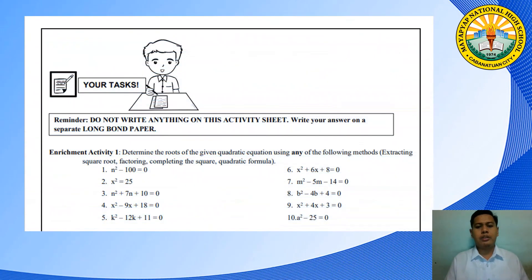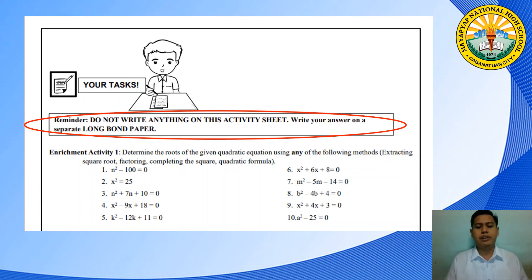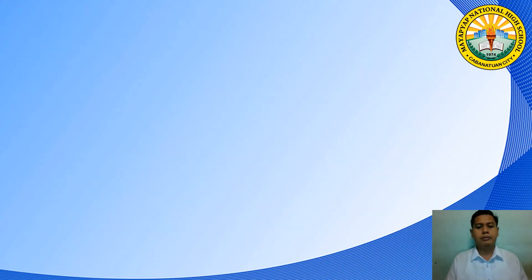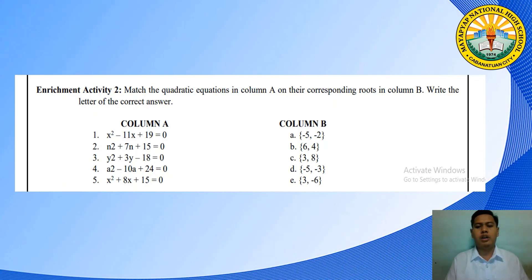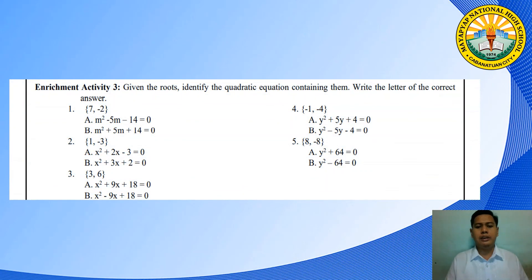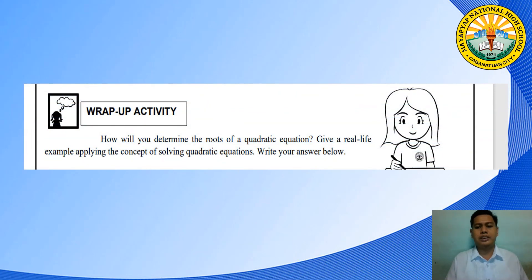Turn your activity sheet to the enrichment part. Do not write anything on the activity sheet — write your answers on a separate long bond paper. For enrichment activity 1, determine the roots of 10 equations using any of the four methods. For enrichment activity 2, match the quadratic equation from column A to its corresponding roots in column B. For enrichment activity 3, given the roots of a quadratic equation, identify the equation from the given choices. For your wrap-up activity, explain how you determine the roots of a quadratic equation and give a real example applying the concept.